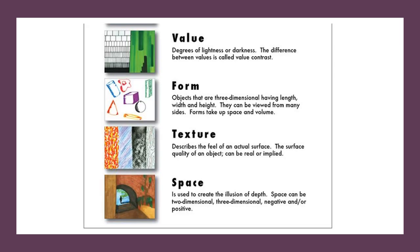Value — another name for value is tone. It's the degrees of lightness and darkness. You may add value when you color with your wax crayons, for example dark blue and light blue. Then form — you are going to create form when you etch out a specific pattern or picture. Texture — it's beautiful to create texture in an etching artwork. And then space is used to create the illusion of depth. Space can be two dimensional, three dimensional, negative and or positive space.